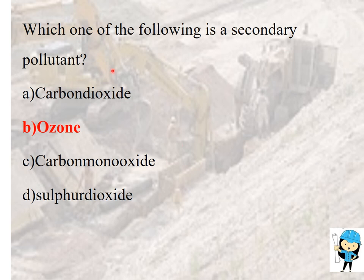The first question is: which of the following is a secondary pollutant? The options are ozone, carbon dioxide, carbon monoxide, sulfur dioxide, or primary pollutant. The answer is ozone. Ozone and PAN are secondary pollutants.